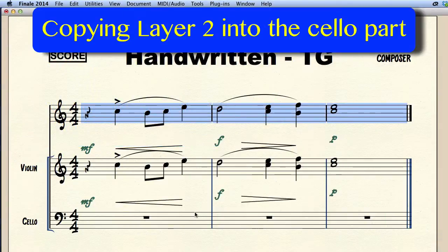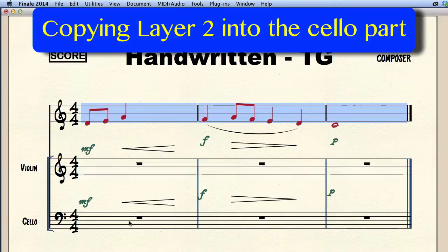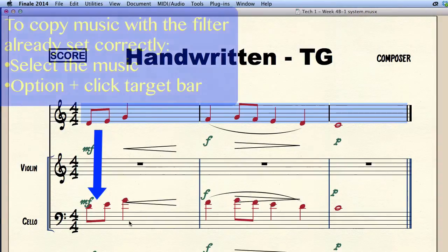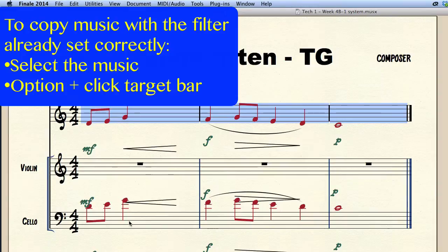Now let's switch to layer 2, select the music we want to copy and option click the target measure. Remember that we already set the filter to copy all when we copied layer 1 which means that the filter's preferences are already set correctly.